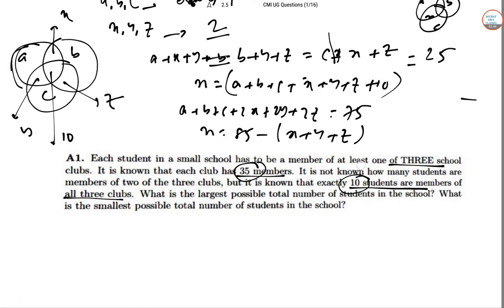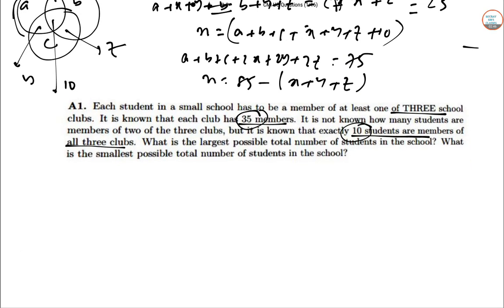That gives N equal to 85 minus X plus Y plus Z. Now the maximum possible N cannot be more than 85. So N has to be less than 85 and it is achieved when X equal to Y equal to Z equal to 0 and A equal to B equal to C equal to 25.